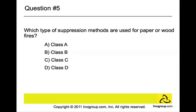Question number five: What type of suppression methods are used for paper or wood fires? Is it class A, class B, class C, or class D? The answer is class A. These types of fires should be suppressed with water or soda acid. They are the most common types of fires and fairly simple to fight and contain, by simply removing the heat, oxygen, or fuel, or by suppressing the underlying chemical reaction.